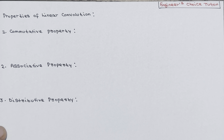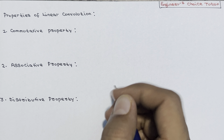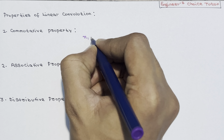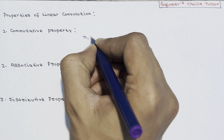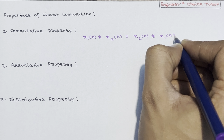Now let's see some properties of linear convolution. We will discuss three properties: commutative, associative, and distributive. The commutative property states that convolution of x1(n) and x2(n) is equal to convolution of x2(n) and x1(n).